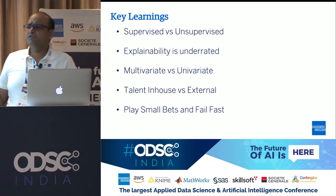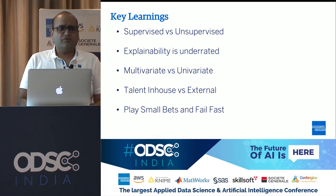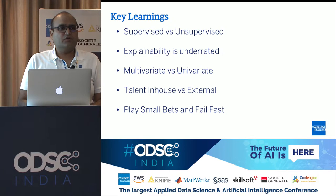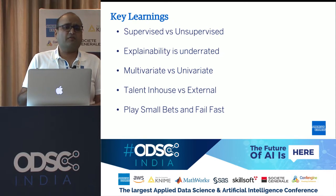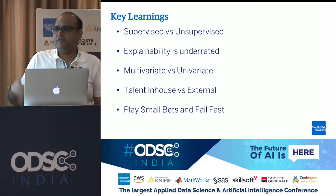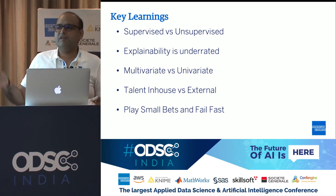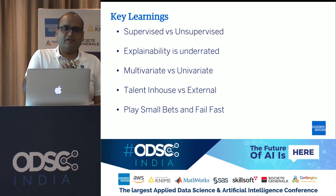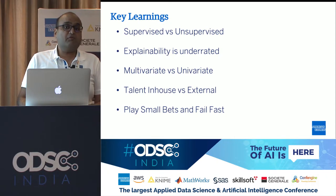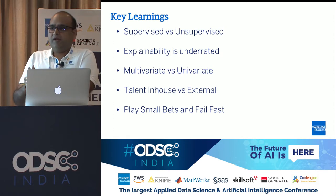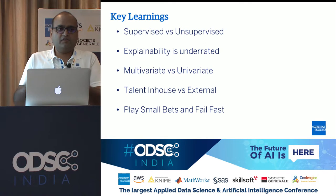Let me share some key learnings from this journey. The first was supervised versus unsupervised. We initially thought about going with supervised learning, but the number of labeled data points from historical issues is very low — maybe one or two real issues in the past year or two. Training a model on that was very difficult. So we went unsupervised, but what we are now doing is taking user feedback on every alert generated — whether it's relevant or not — and feeding that back into the system.